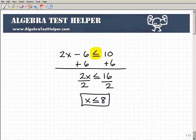So to solve for x, all I need to do is divide by 2 on both sides of the equation, and I get x is less than or equal to 8. So I'm basically done.